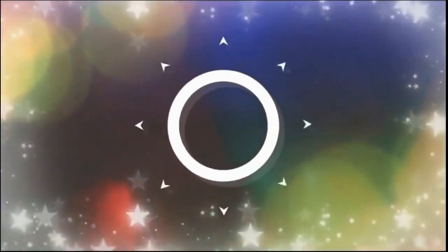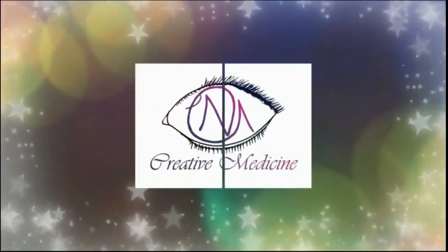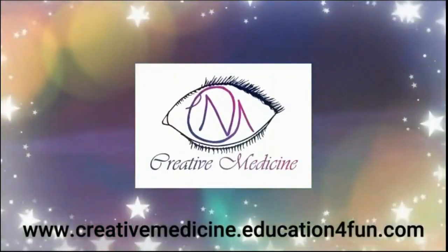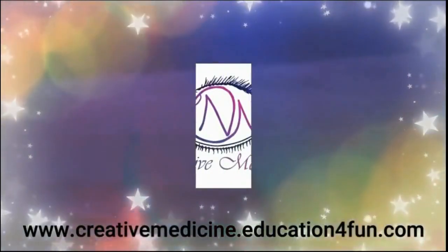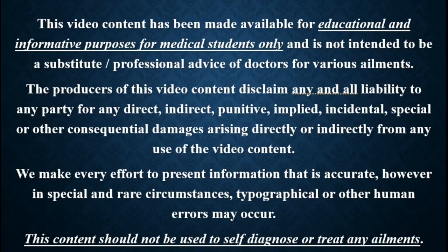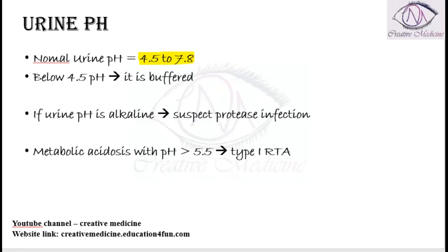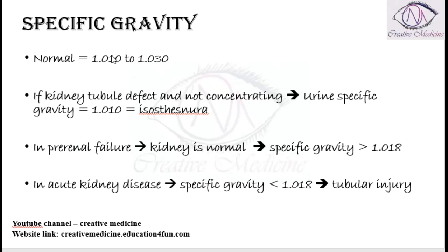Hello friends, welcome to Creative Medicine. In this lecture, we will learn about specific gravity. The normal specific gravity of urine is 1.010 to 1.030.